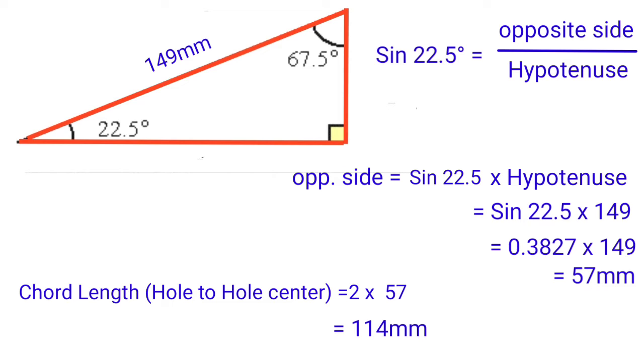Hypotenuse value we know is 149 mm. So 0.3827 multiplied by 149. This answer is 57 mm. That is the opposite side value.